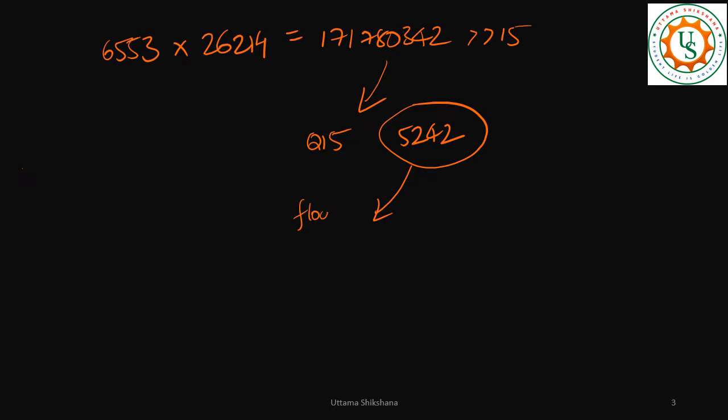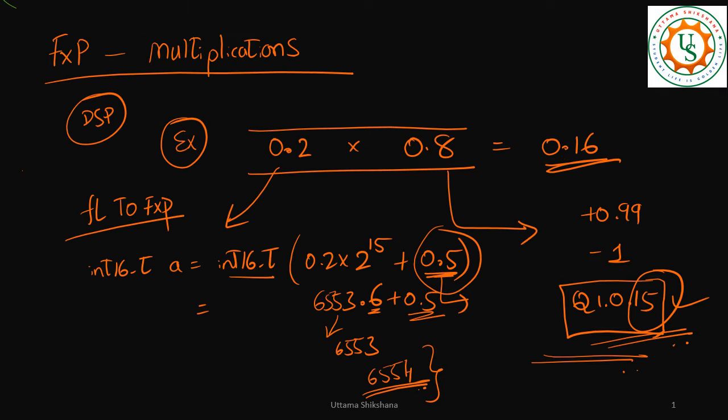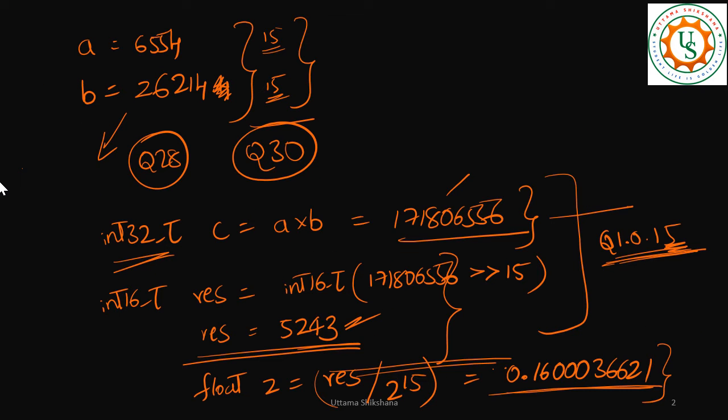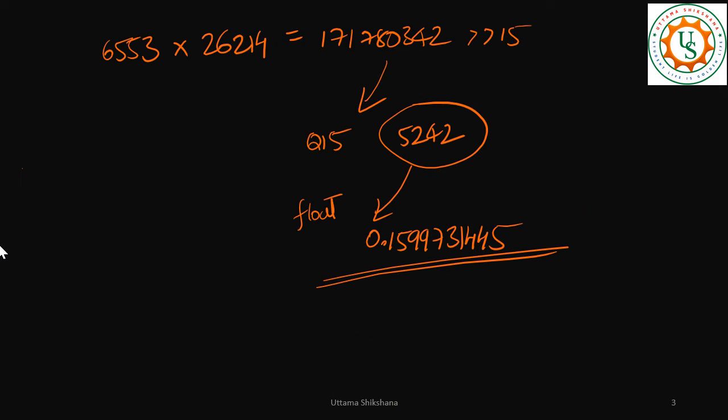So can you see here we lost some information? Now if I convert back to float point, then what would I get? 5242 divided by 2 to the power of 15. If I do this, I got 0.1599731445. Clearly you can see that if I don't do this 0.5 addition, then I am seeing that there is a loss here. We have got almost accurate, and here we are losing some information.